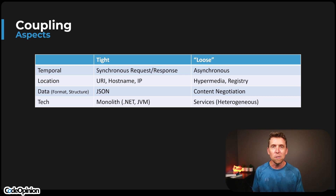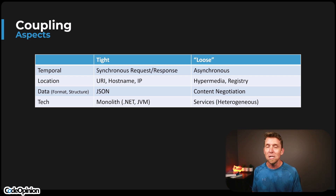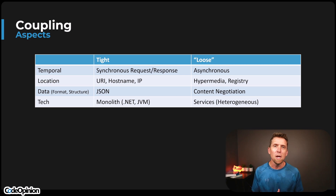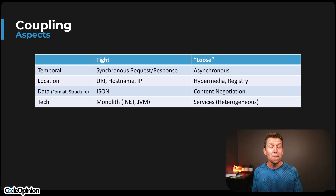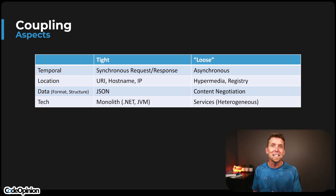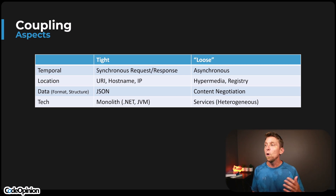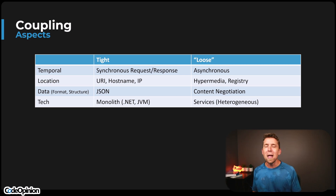The same thing applies for location. If you're making an HTTP request, you need to know the URI, the hostname, the IP — whatever technology you're using for direct communication. Loose coupling on that hand is maybe using some type of registry, so what you're connecting to you're oblivious to. I'll have a link at the end of this video about hypermedia — which removes that location coupling so your responses tell the client the actions they can do and where those locations are — as well as the next aspect, which is data: not just the format, but the structure.